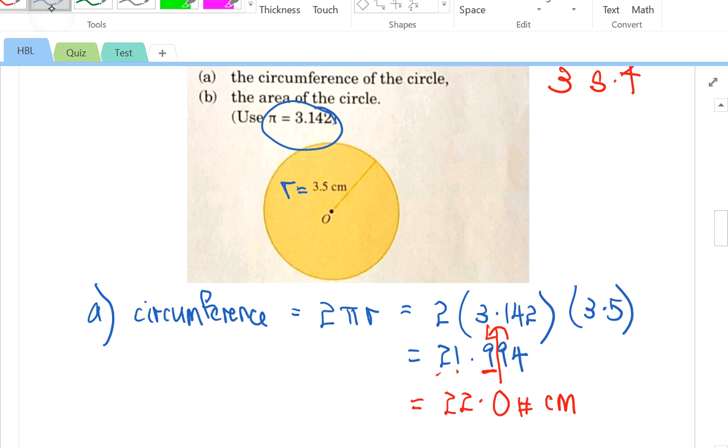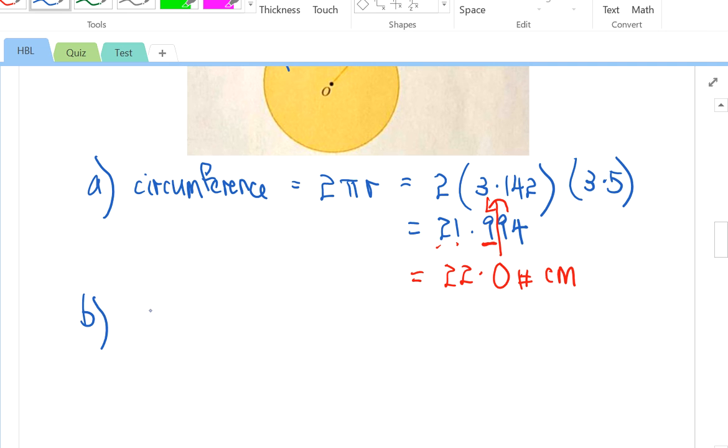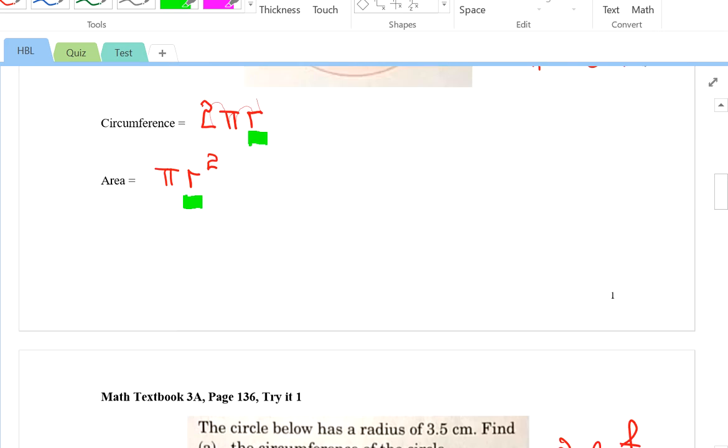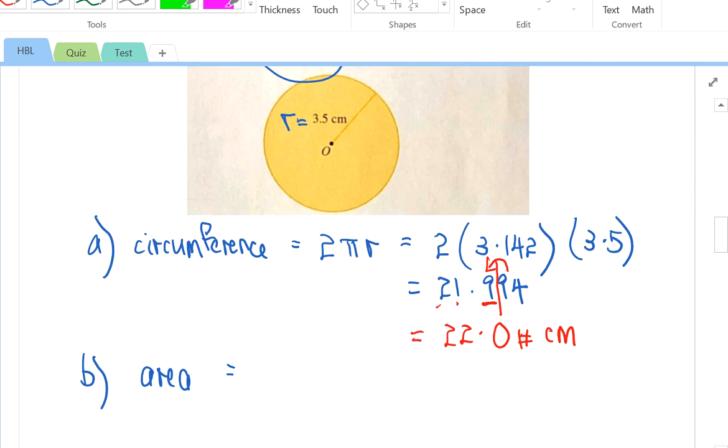Let's take a look at part B now. Very similar. If I want to find the area, just write down the area formula. You have learned this before as well. Pi R squared, as in primary school. What is the value of pi? Please take note. It's 3.142. Put it in bracket. Because there's an R, 3.5, and please write the square outside the bracket. After that, press the calculator.